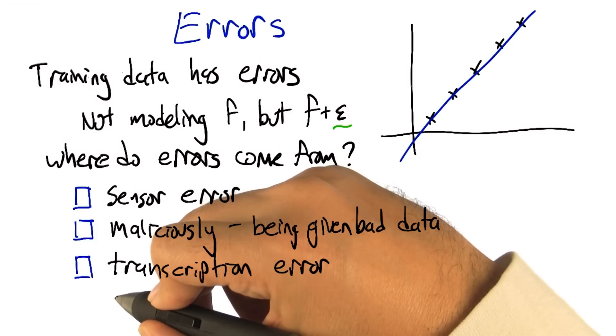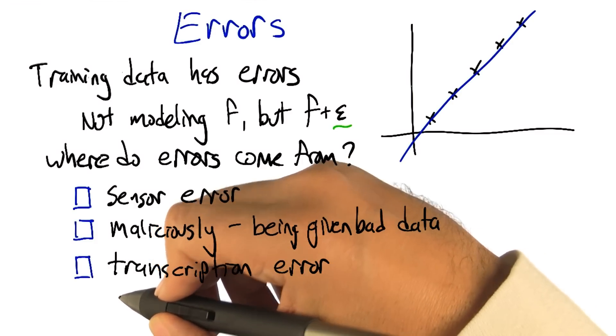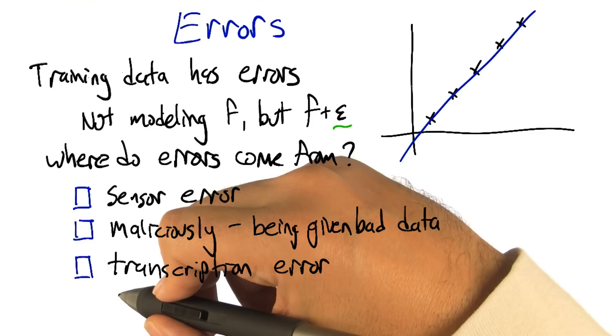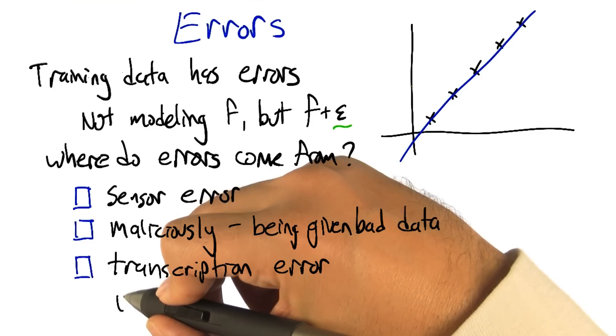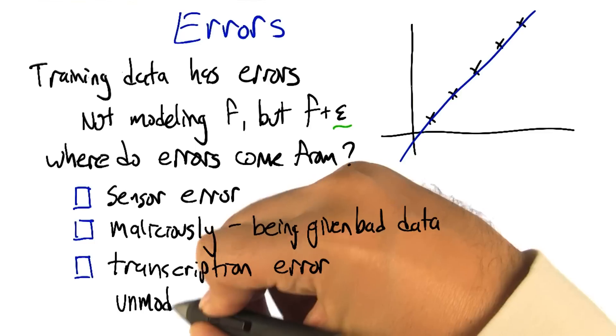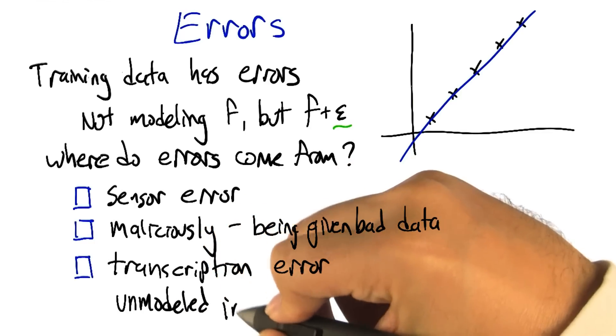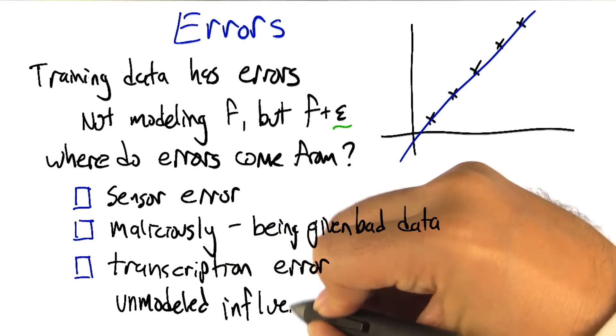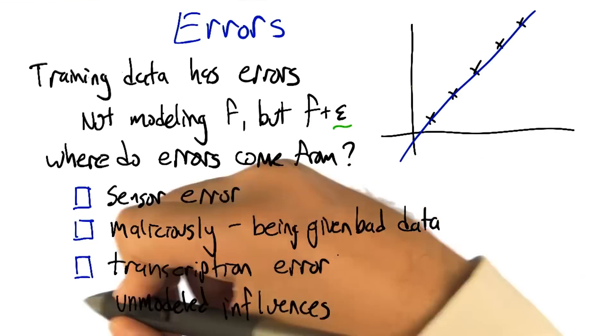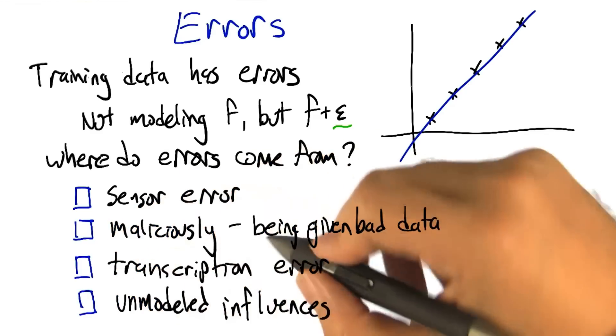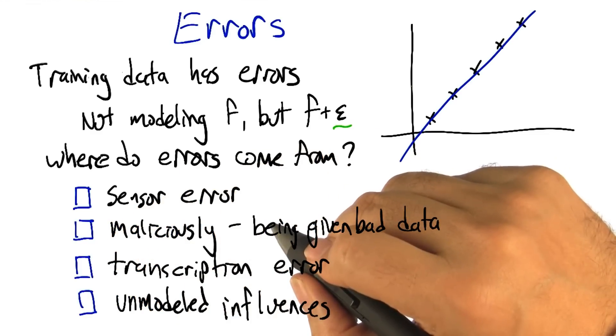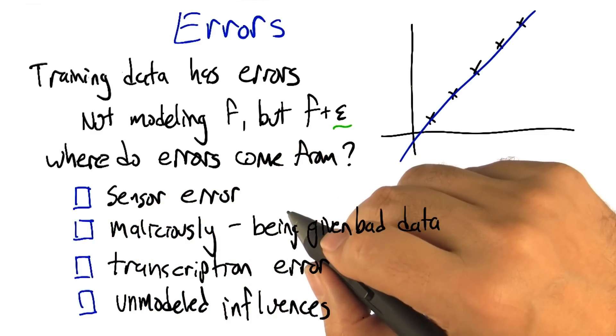How about one more? How about there's really just noise in the process? So how about that we took an input x, but there's something else going on in the world that we weren't measuring. And so the output might depend on other things besides simply the input that we're looking at. Right. So what would be an example of that? So an unmodeled influence might be—look at the housing data. What about the housing data? That's what I was thinking exactly.